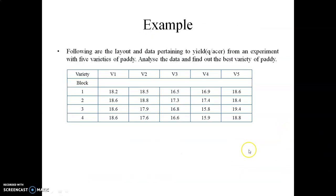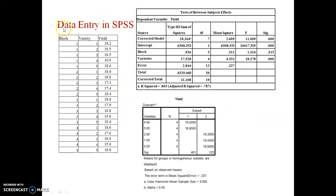I will take an example to show how we can solve this in SPSS. The following are the layout and data pertaining to yield in quintals per acre from an experiment with 5 varieties of paddy. We need to analyze the data and find out the best variety of paddy — that is, which variety gives the best yield. This is the data given with different blocks. We will do this example through SPSS. We need to enter the data block-wise, with variety and then yield.